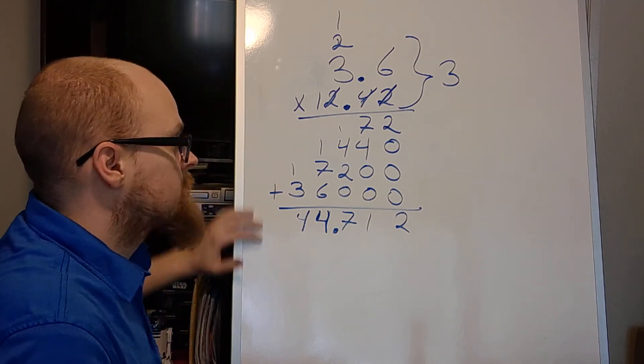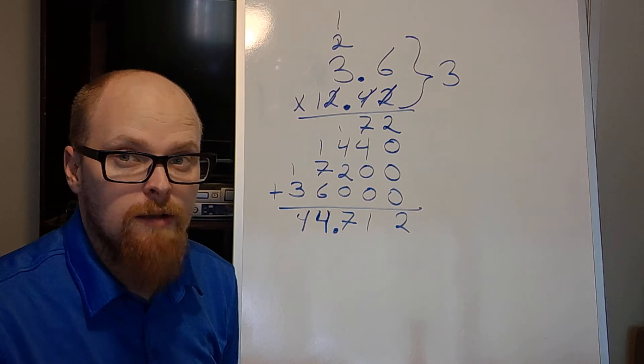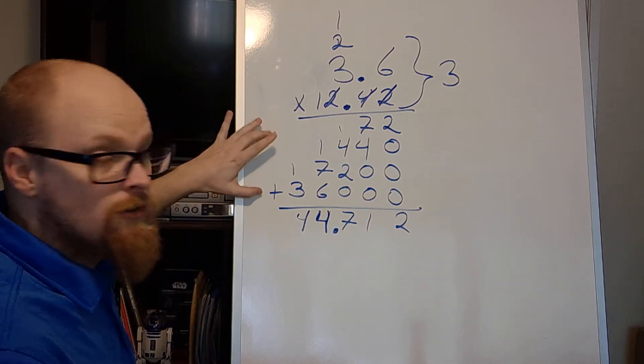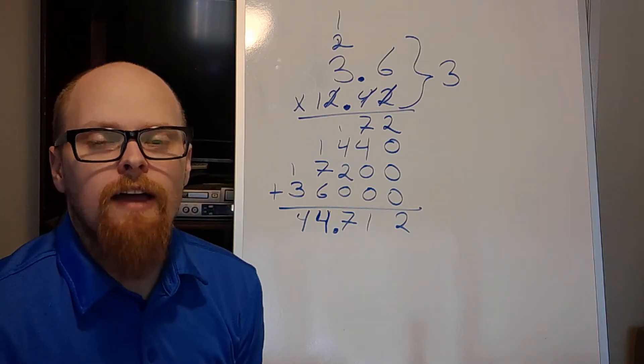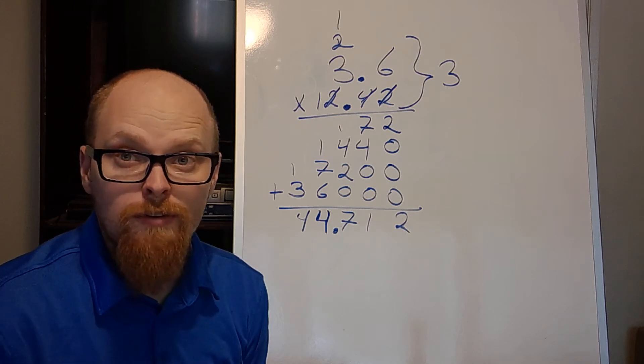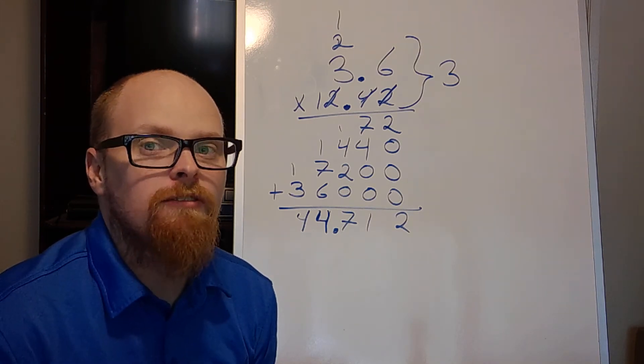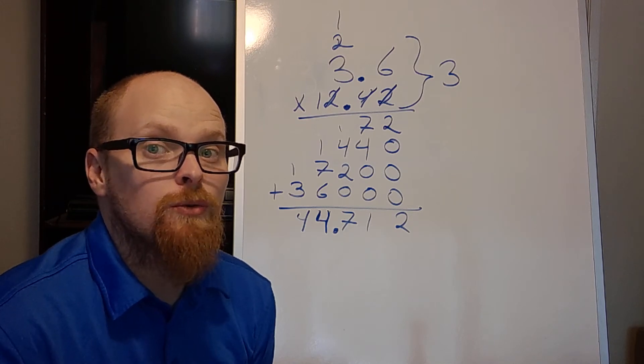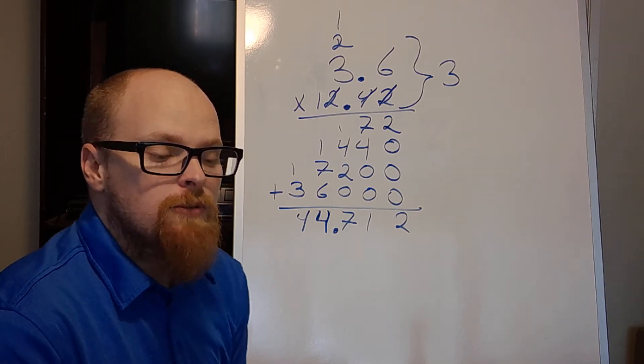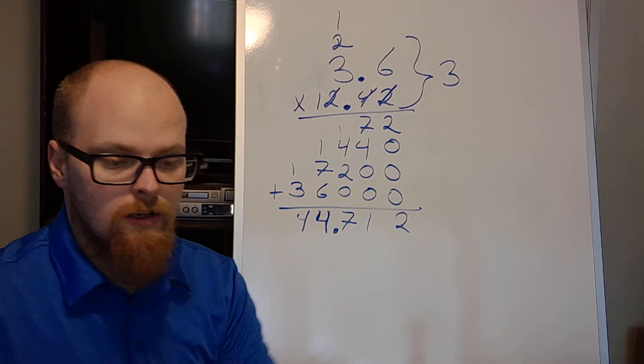This is multiplication. Again, ideally you put that small number on the bottom so we don't have as much adding to do. If I had the small number on the bottom I would add just 2 of these instead of 4. You would come out with the same answer. It would still be 44.712. Alright? Let's move on to division.